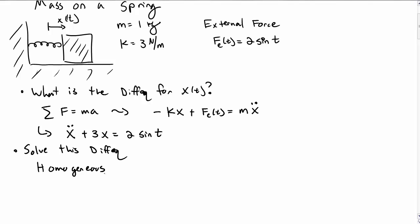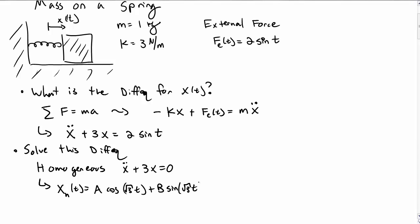We first start with the homogeneous solution, which is the solution to x double dot plus 3x equals 0. By the usual methods, we find that that solution is a cosine of the square root of 3t plus b sine of the square root of 3t.